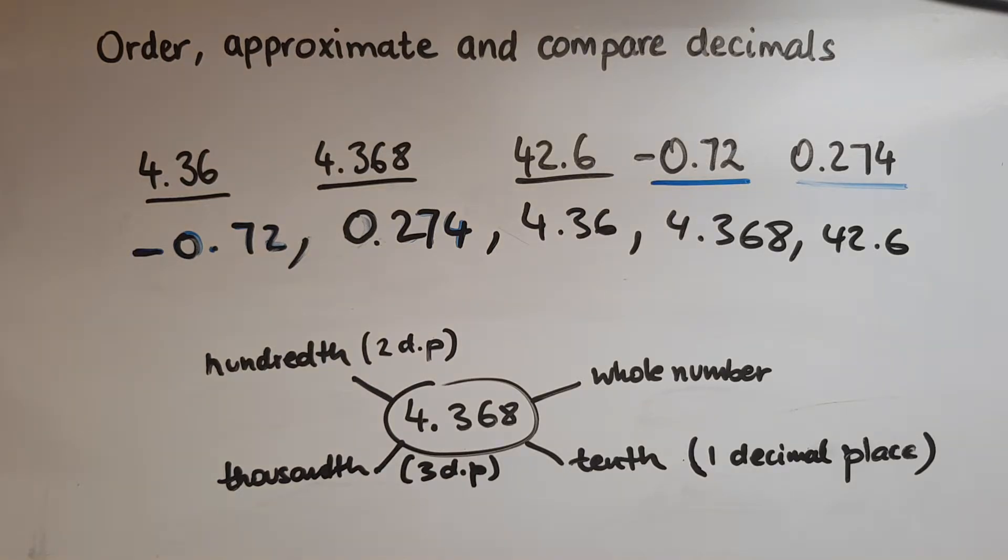Now we'll try and round or approximate a decimal. I've picked one of these, 4.368, to the nearest whole number so that we get rid of the decimal. We have a whole number, no decimal point, no digits after it.